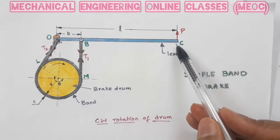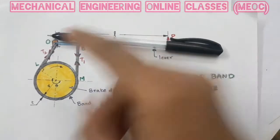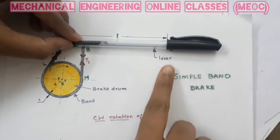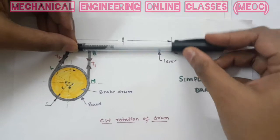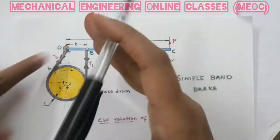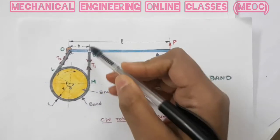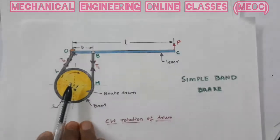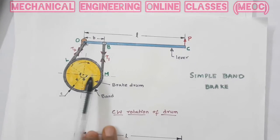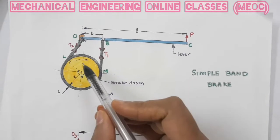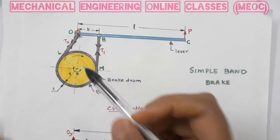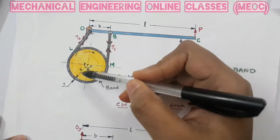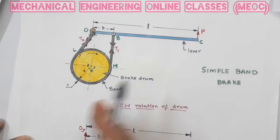When a force P is applied at the end of the lever, the lever will move and raise upward about O, thereby tightening the band. Because the band is tightened and wound around the brake drum, the brake drum will stop rotating. Let us consider the case where the drum or wheel is rotating in a clockwise direction. Since the wheel is rotating clockwise, one side of the drum will be the tight side and the other will be the slack side.